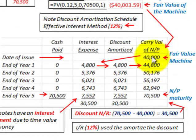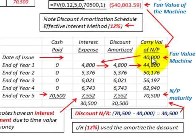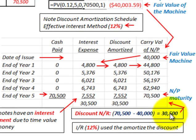We need to set up an amortization schedule. The carrying value of the note at the date of issue is forty thousand dollars. At the end of the fifth year, the note payable maturity amount is seventy thousand five hundred dollars. The discount on the notes receivable is simply the difference: seventy thousand five hundred dollars minus forty thousand dollars equals thirty thousand five hundred dollars, which has to be amortized using the effective interest rate method at twelve percent.